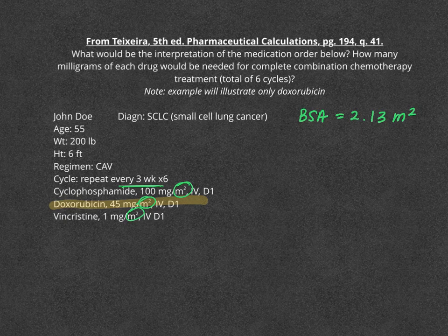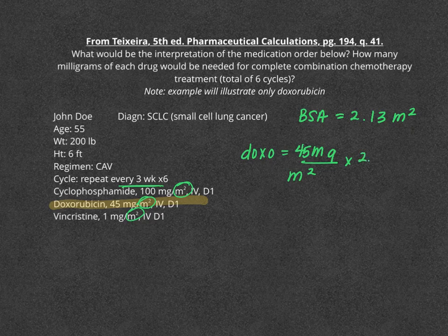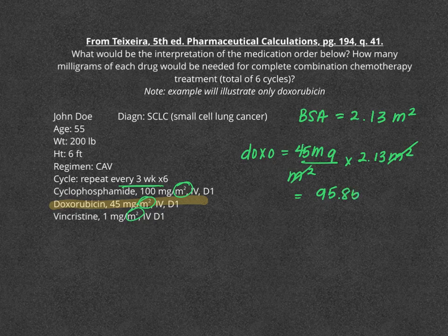I used the nomogram on page 176 for that. I'm only concerned with illustrating the doxorubicin calculation to keep it simple. Doxorubicin is dosed at 45 milligrams per meter squared. We now know that our body surface area is 2.13 meters squared, so we cancel out the meters squared and we get 95.85 milligrams.